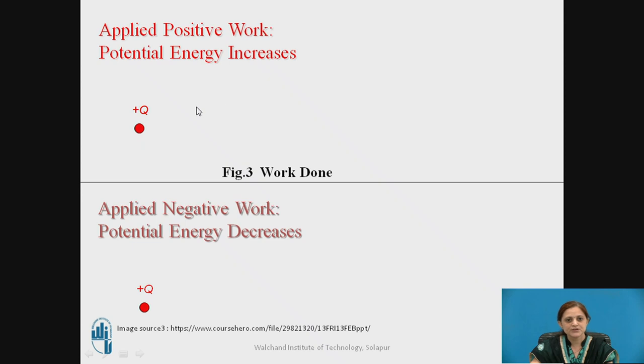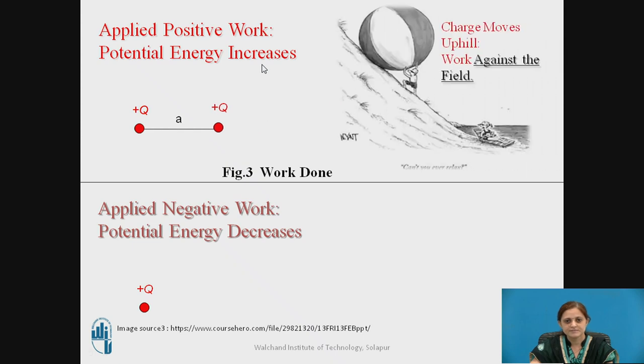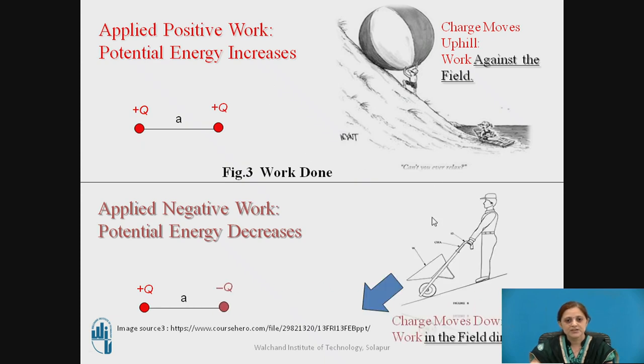Now the work is defined in two ways, positive work and negative work. In first figure charge moves uphill. That is work is done against the field. That means the applied work is positive. As the work is positive, potential energy increases. And in second figure the charge moves downhill. That is the work is in the direction of the field. So the work is negative. As the work is negative, the potential energy decreases.